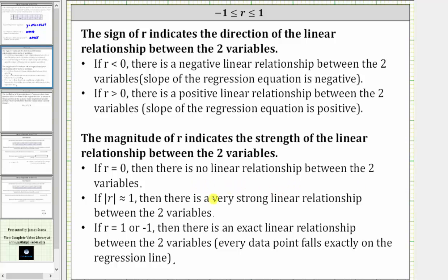If the absolute value of r is approximately one, then there is a strong linear relationship between the two variables, and if r is equal to one or equal to negative one, there is an exact linear relationship between the two variables, which means every data point falls exactly on the regression line.